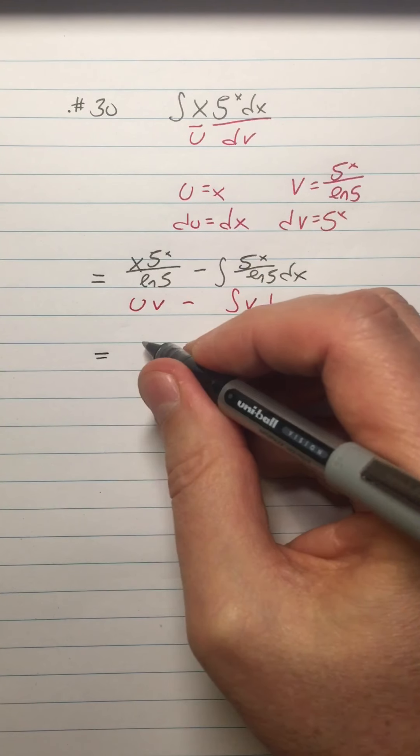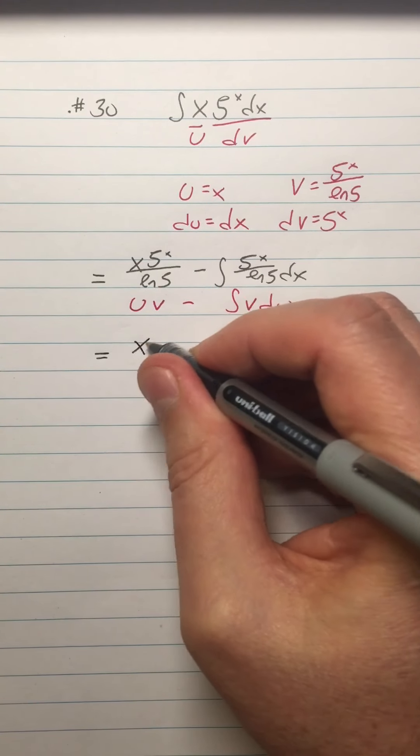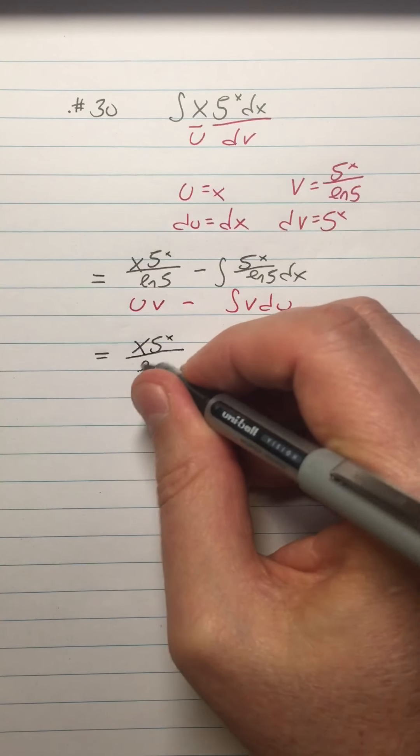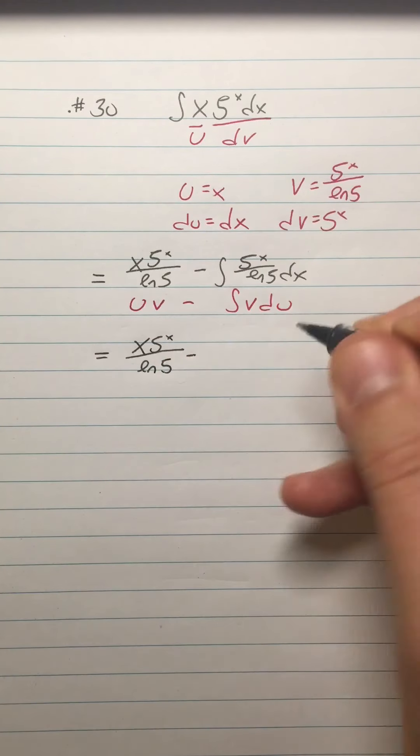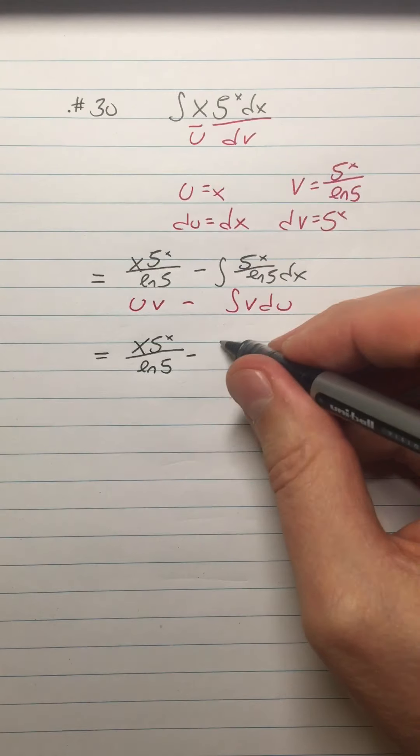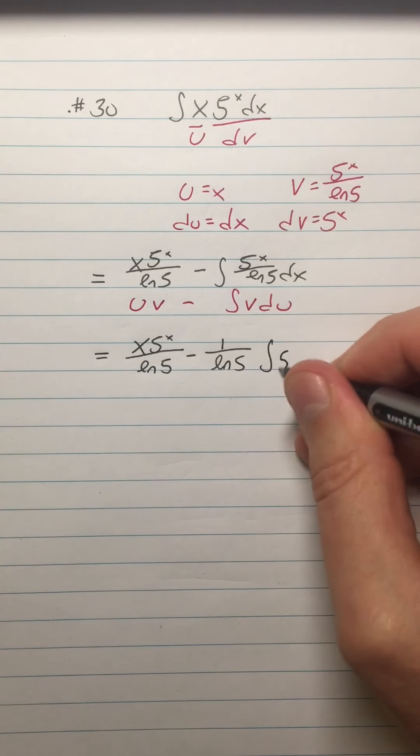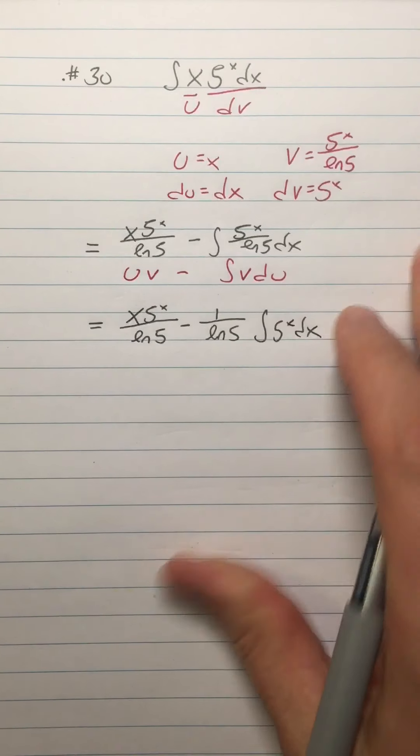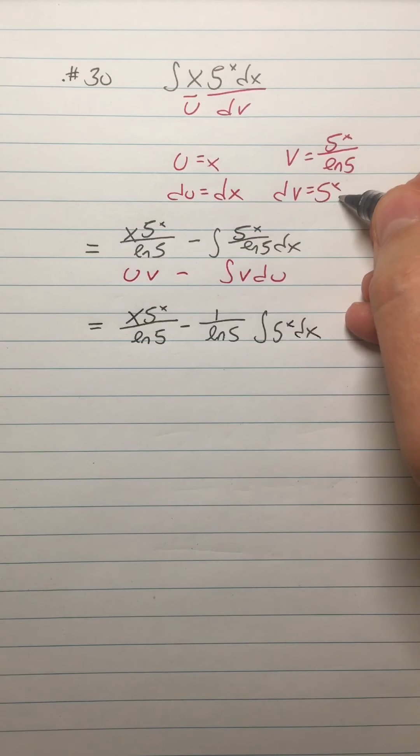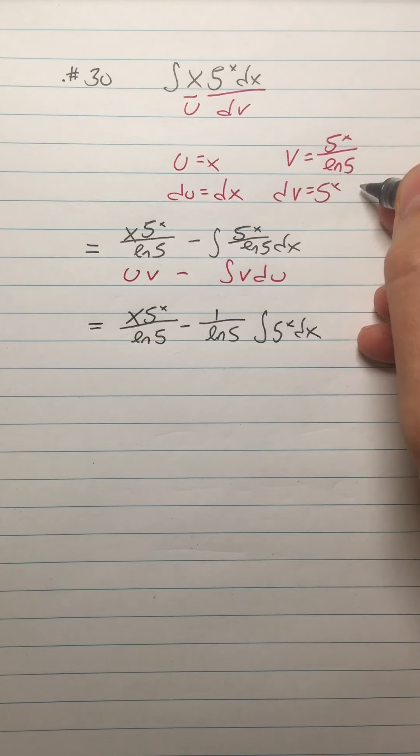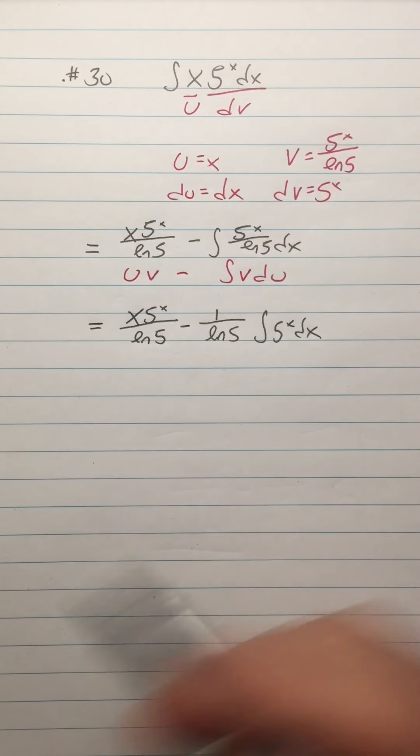I'm going to pull out the one over ln 5 anyway, because you got to remember in all of this, the ln 5 is just a constant. It's not a function. So you can just treat it like it was four or something. So I'm going to have this be minus one over ln 5, integral of five to the x dx. And then once again, I have to remember that the antiderivative of five to the x is five to the x over ln 5. It's the only reason I wanted to do this example.